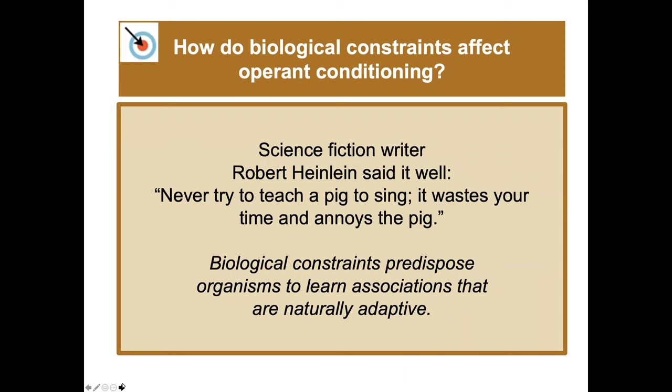How do biological constraints affect operant conditioning? As science fiction writer Robert Heinlein said, 'Never try to teach a pig to sing — it wastes your time and annoys the pig.' Biological constraints predispose organisms to learn associations that are naturally adaptive. Interestingly, a speech language pathologist in Los Angeles created a soundboard with words that her dog was learning to communicate with, touching buttons to say things like 'outside' or 'happy.'